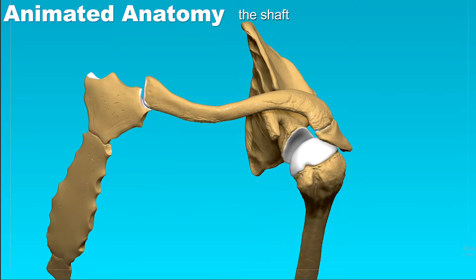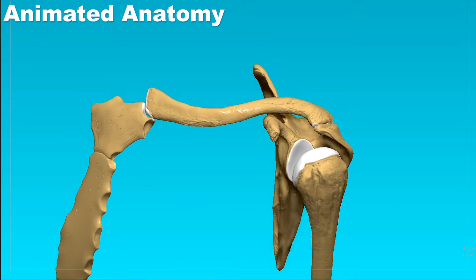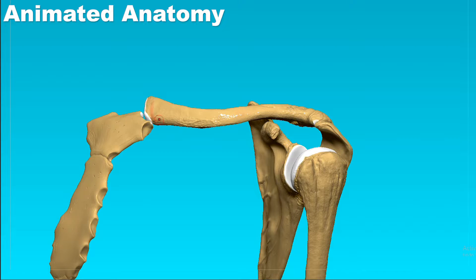While looking at the clavicle from the top, it is important to remember that the sternal end is convex anteriorly while the acromial end is concave anteriorly. You should also remember that the sternal end is thick and the acromial end is flat.